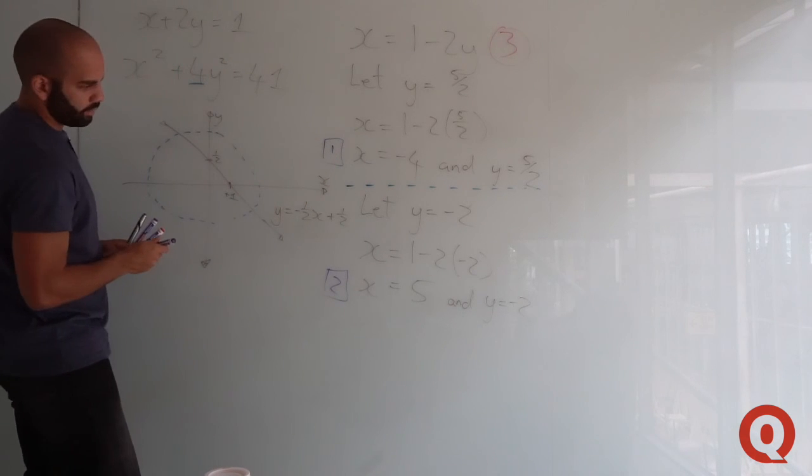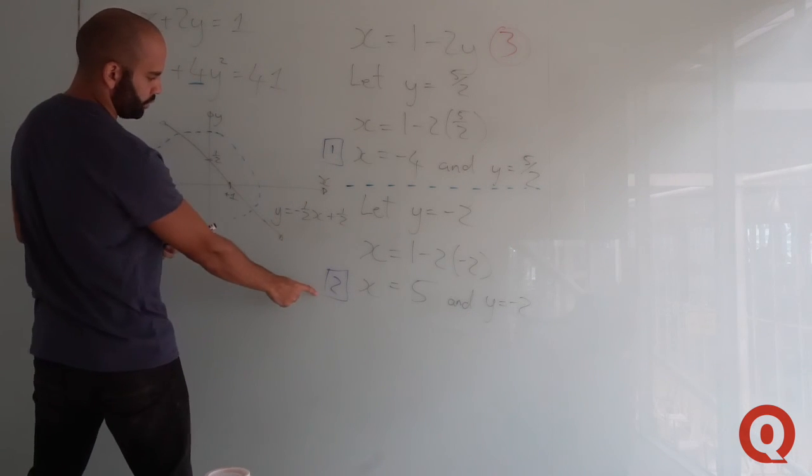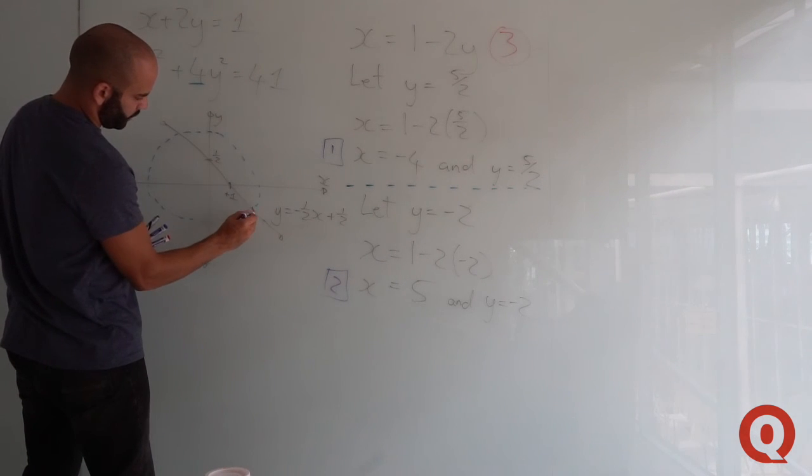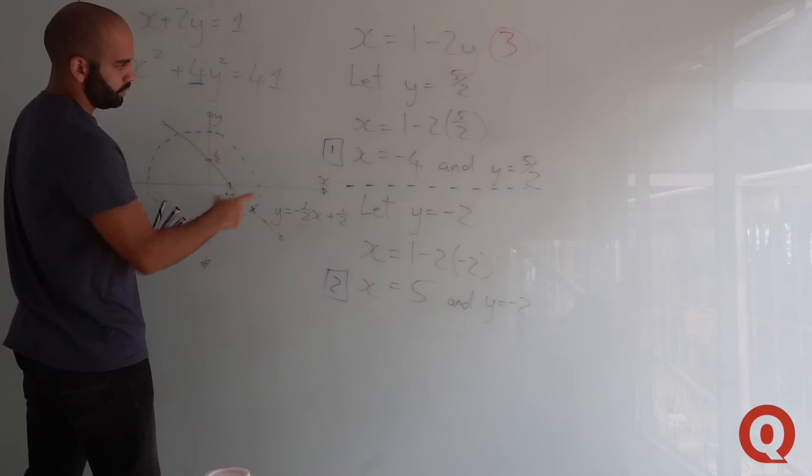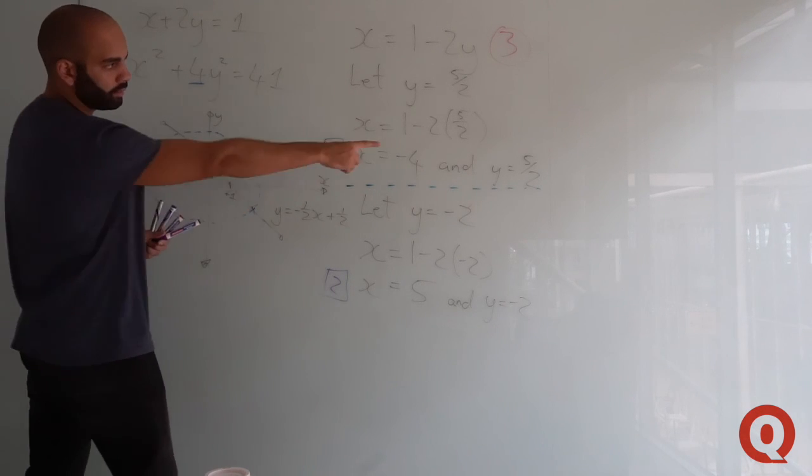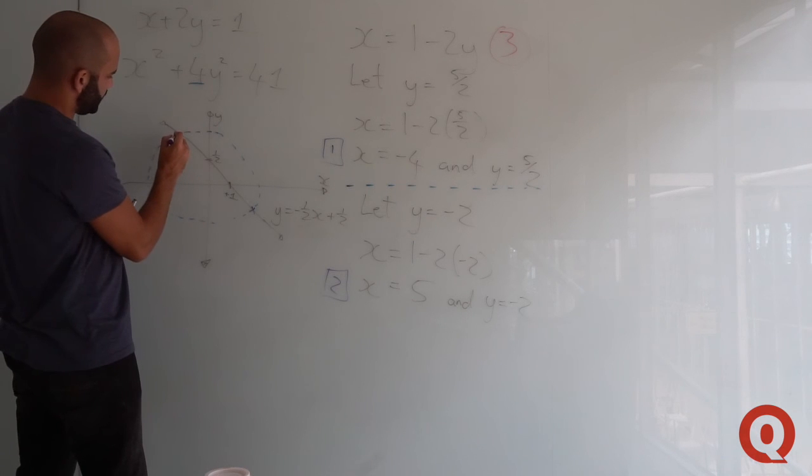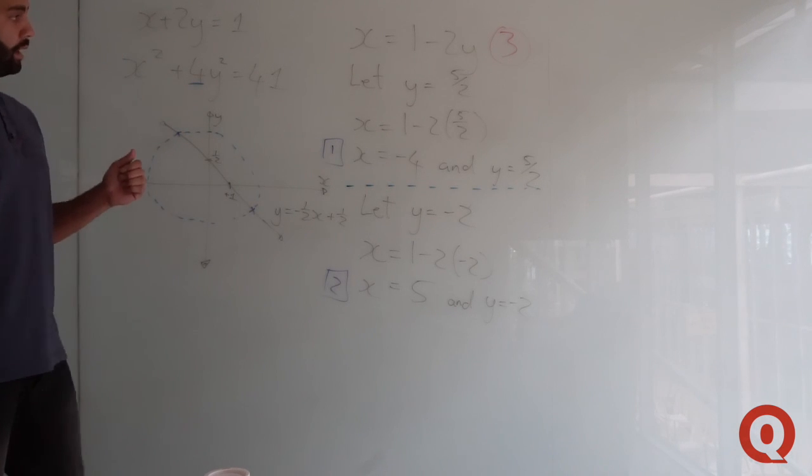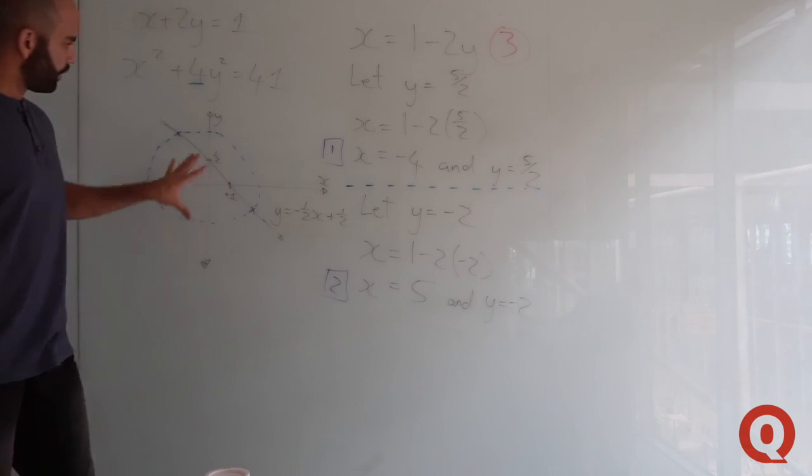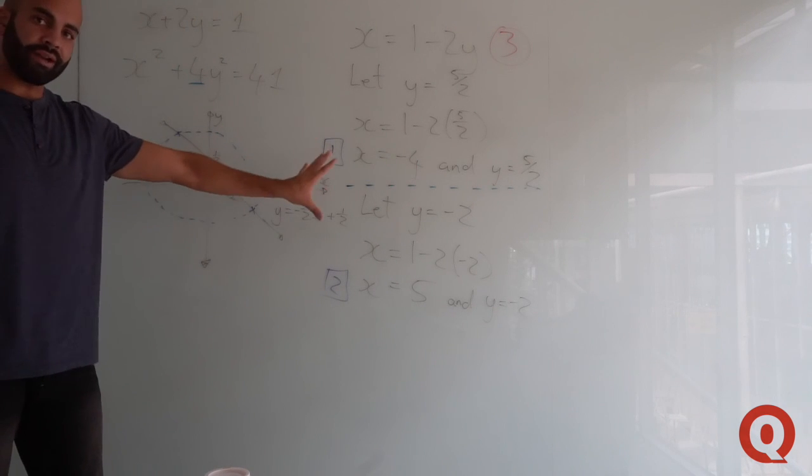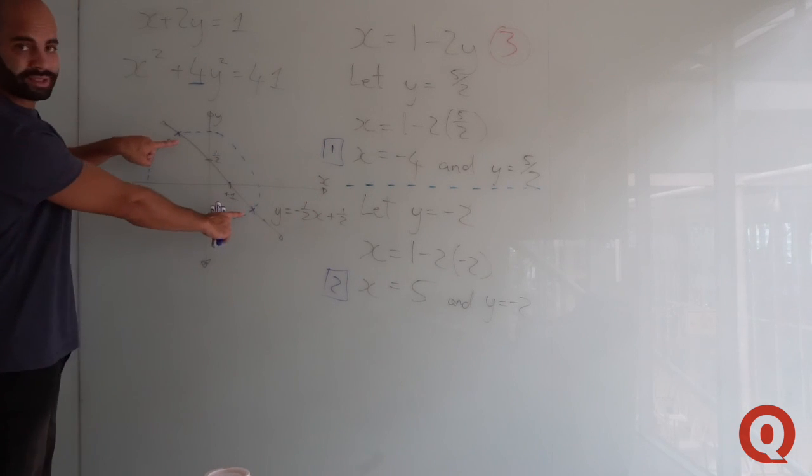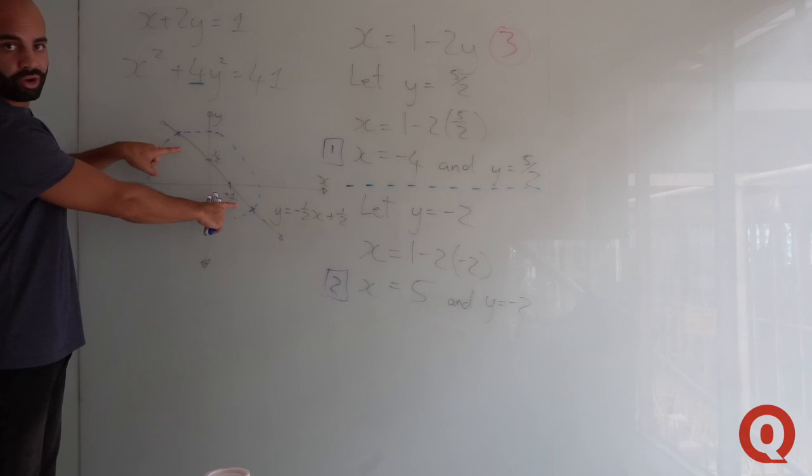Where would they lie? Point 2, x equals 5 and y equals minus 2, would be somewhere here. Solution 1, x equals minus 4 and y equals 5/2, would be here. So algebraically you worked out where these intersection points are. Graphically, the solution results in two intersection points of these two functional graphs.